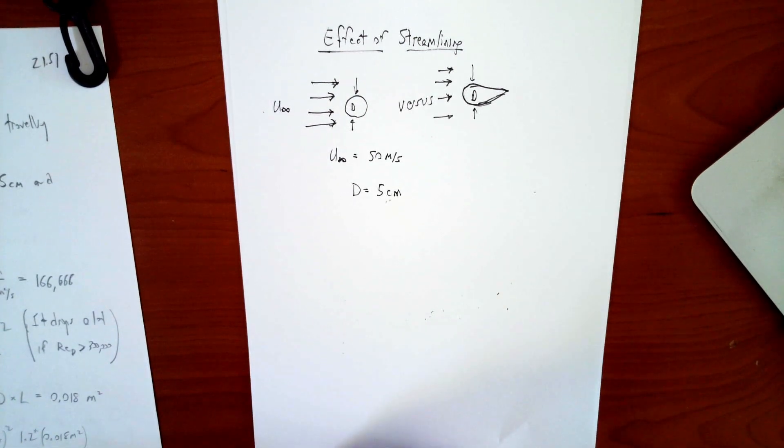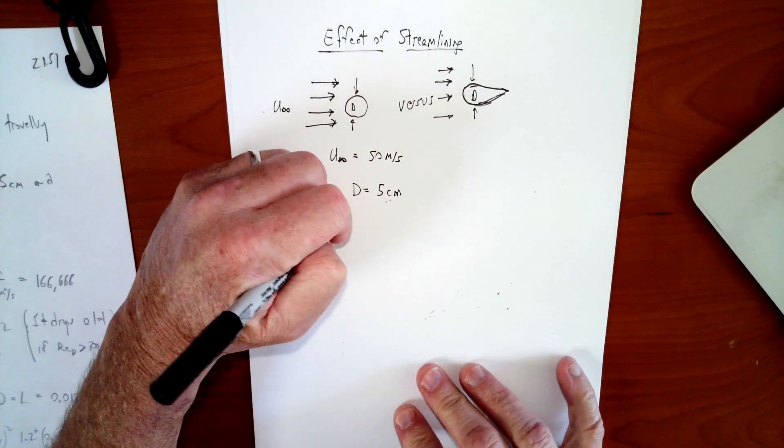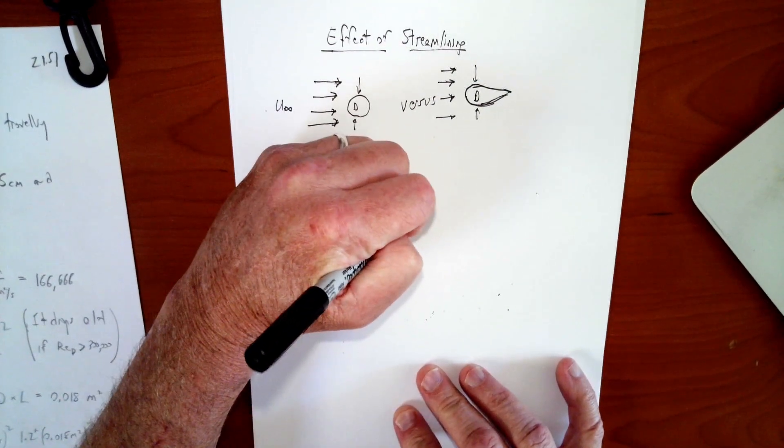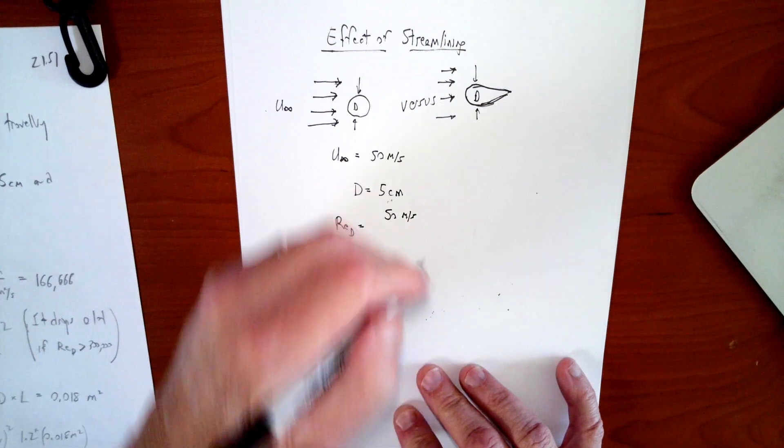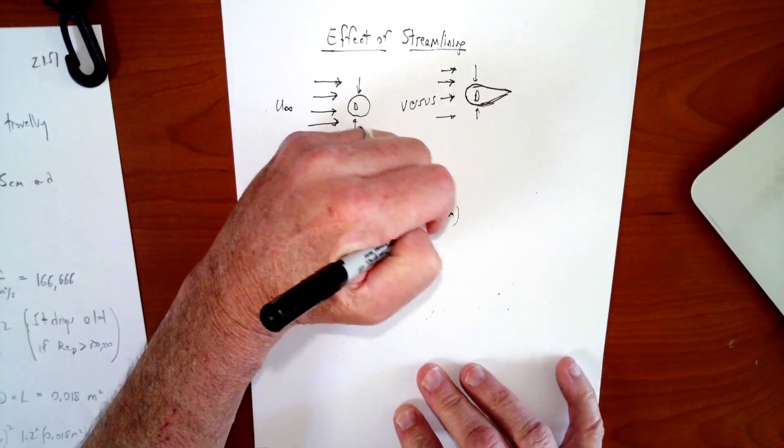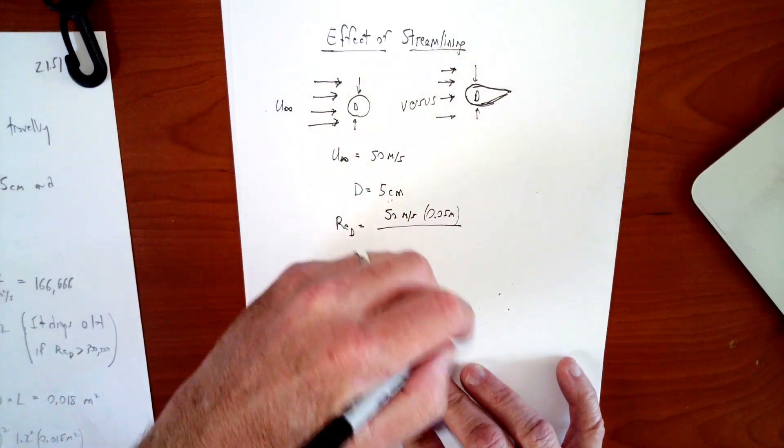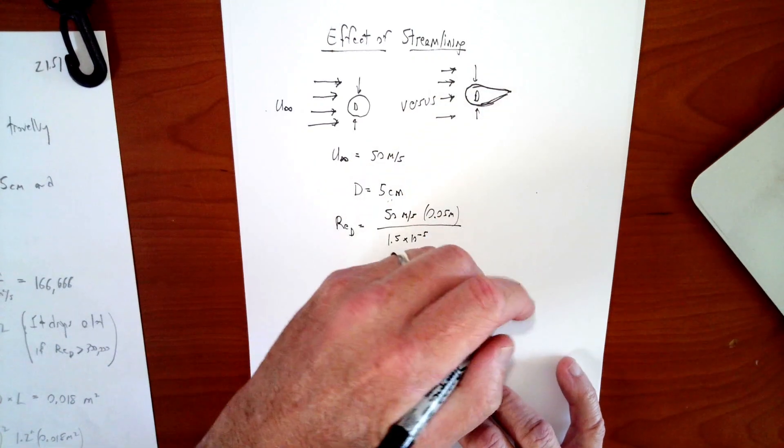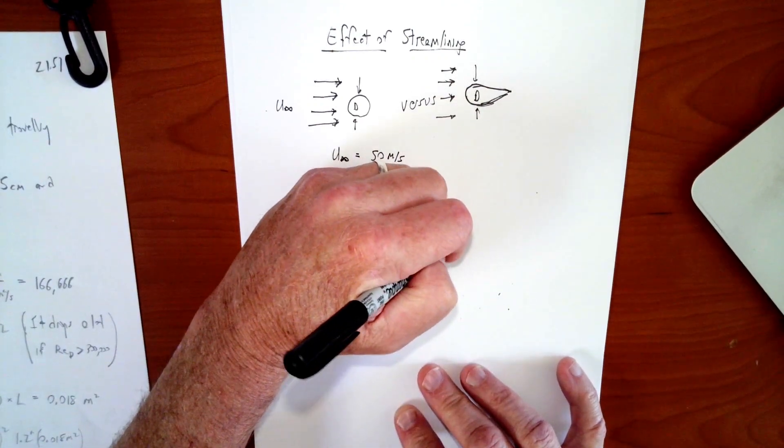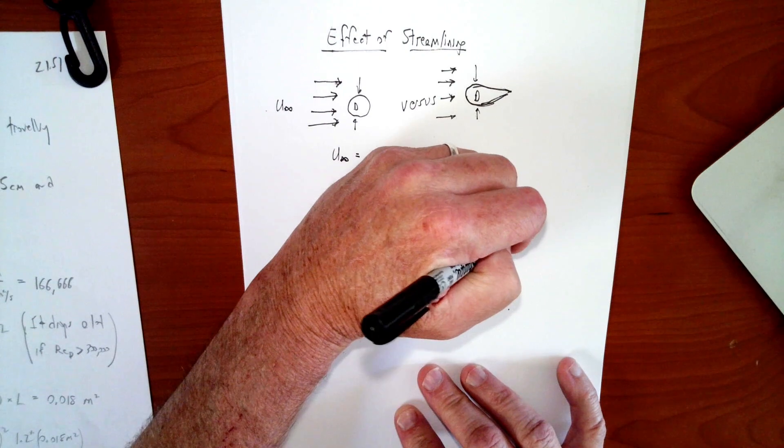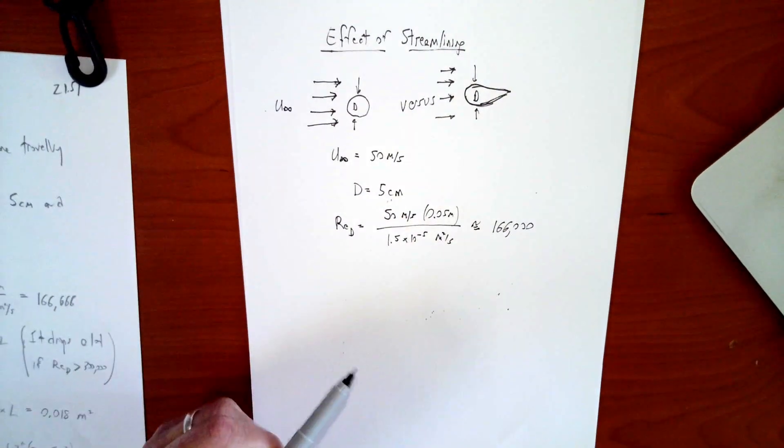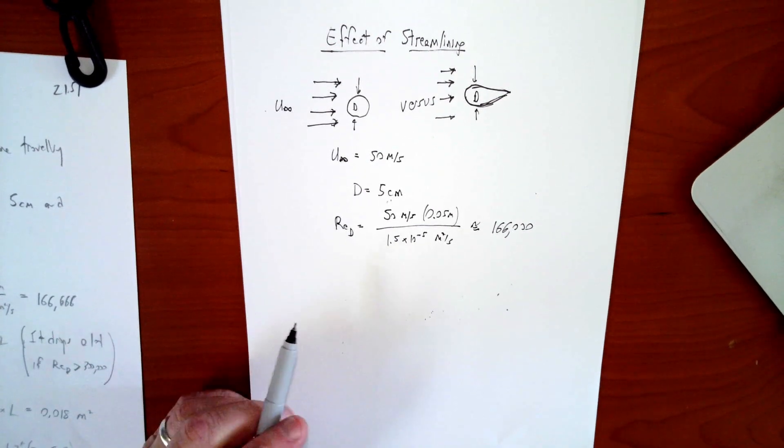So for the circular strut, for either strut, we can calculate the Reynolds number. Reynolds number based on D, of course, we've got our 50 meters per second as our velocity. And we've got our diameter, which is the same for both, 0.05 meters. And we've got the viscosity, the kinematic viscosity for air, 1 times 10 to the minus 5 under standard conditions, meters squared per second. So our Reynolds number comes out to be about 166,000.